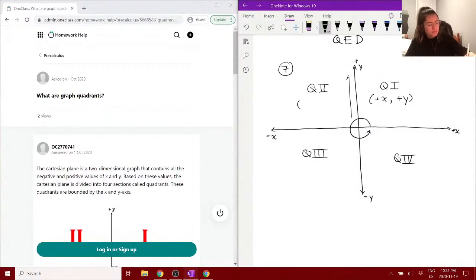So, positive x and positive y in the first quadrant. Now, in the second quadrant, we have the positive y, sorry, but the negative x. We have negative x and positive y in this second quadrant.